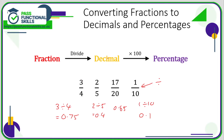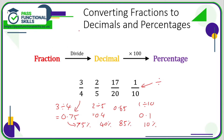To go from a decimal to a percentage, multiply by 100. So 0.75 multiplied by 100 is 75% — three quarters is 0.75, which is 75%. Two fifths: 0.4 as a decimal, multiply by 100, gives 40%. 0.85 is the decimal equivalent of 17 twentieths, and multiplying by 100 gives 85%. One tenth is 0.1, and multiplying by 100 gives 10%. So to summarise: fraction to decimal — divide top by bottom; decimal to percentage — multiply by 100; therefore fraction to percentage — divide top by bottom and multiply by 100.